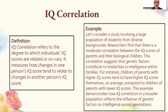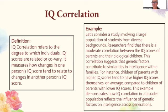IQ correlation refers to the degree to which individuals' IQ scores are related or co-vary — how changes in one person's IQ score tend to relate to changes in another's. For example, researchers find a moderate correlation between the IQ scores of parents and their biological children, suggesting that genetic factors contribute to similarities in intelligence within families. On average, children of parents with higher IQ scores tend to score higher themselves compared to children of parents with lower IQ scores.